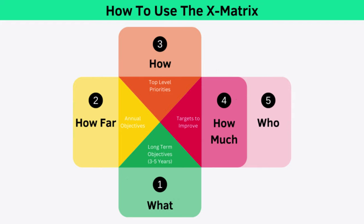Let's take a look at an example. Suppose you want to increase profitability by 25%. You may decide this year you need to increase customer satisfaction by 10%, and you're going to go about that by building quality into the product process. The KPI you're trying to achieve is to increase your Net Promoter Score (NPS) by 10%, and the person responsible is your head of product management.